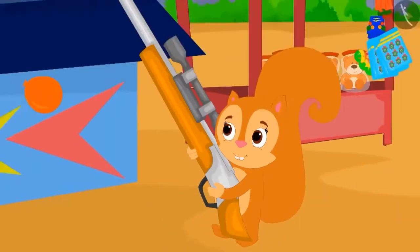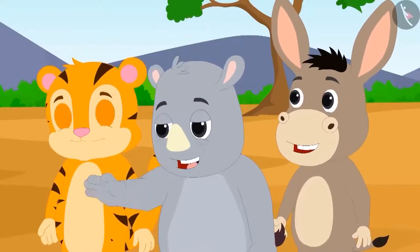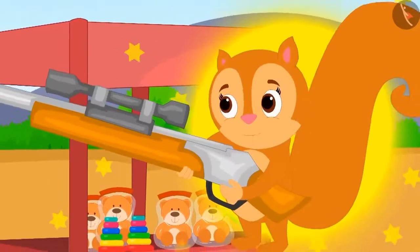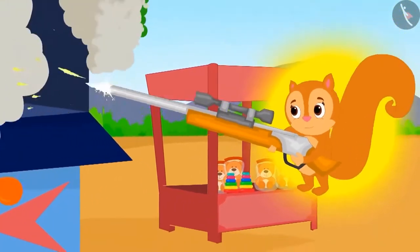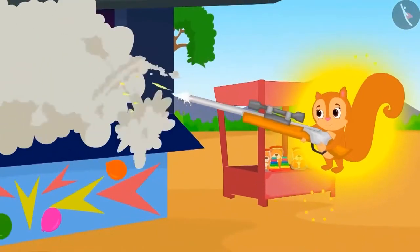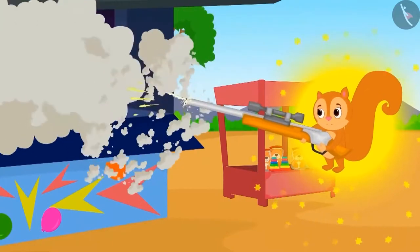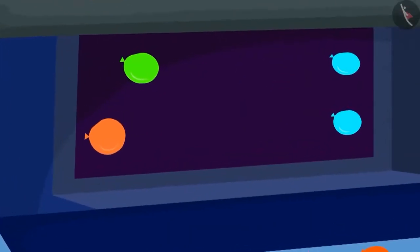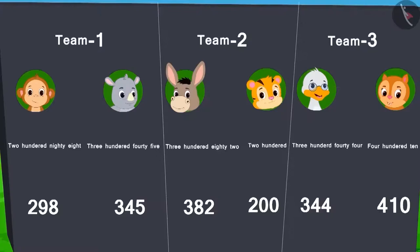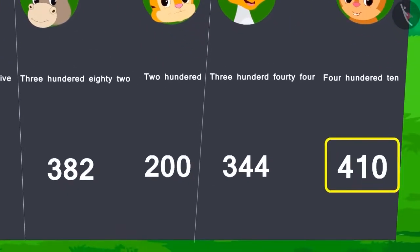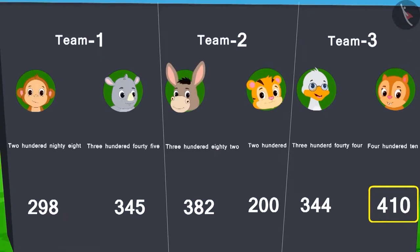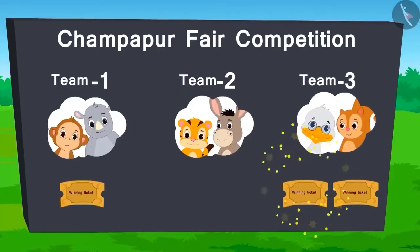The gun is bigger than Chanda and everyone started laughing. Suddenly, there were loud noises of bursting balloons — everyone was astonished. Chanda was firing the gun like a machine gun, continuously bursting the balloons. Once again, there was a magical glow visible around Chanda. Finally, the smoke cleared and the counting began. Chanda burst 410 balloons! With that, team 3 wins the ticket for this round.